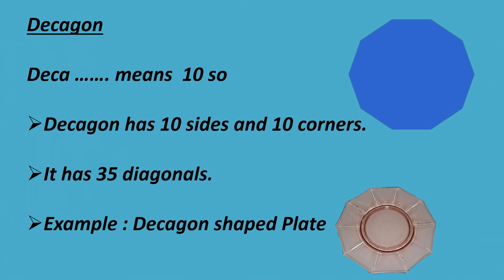Decagon. Deca means ten. So, decagon has 10 sides and 10 corners. It has 35 diagonals. Example: decagon-shaped plate.